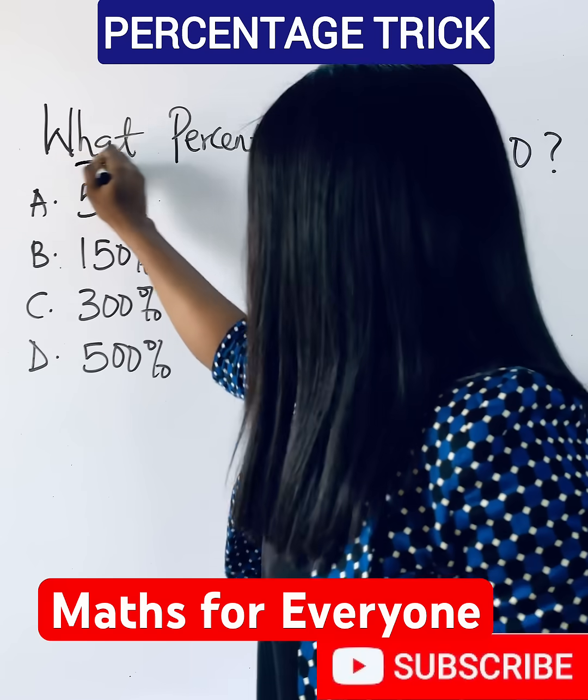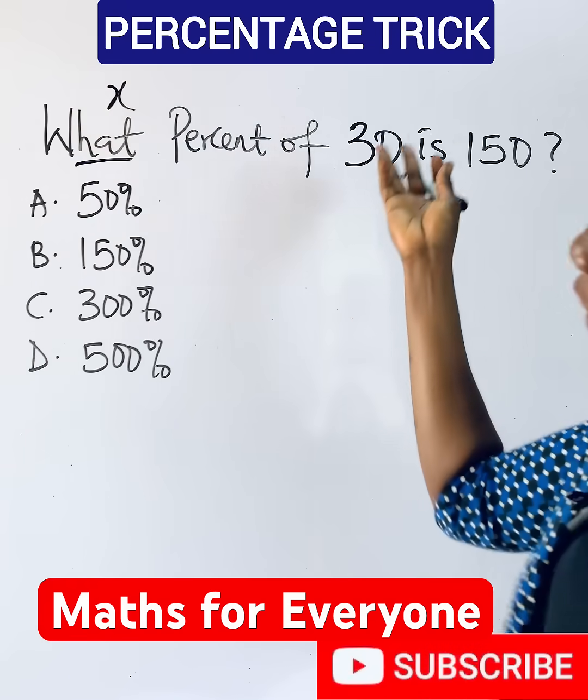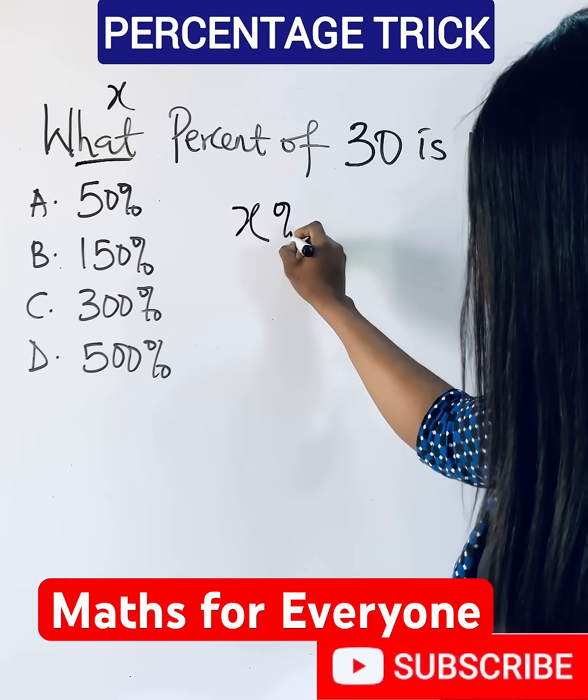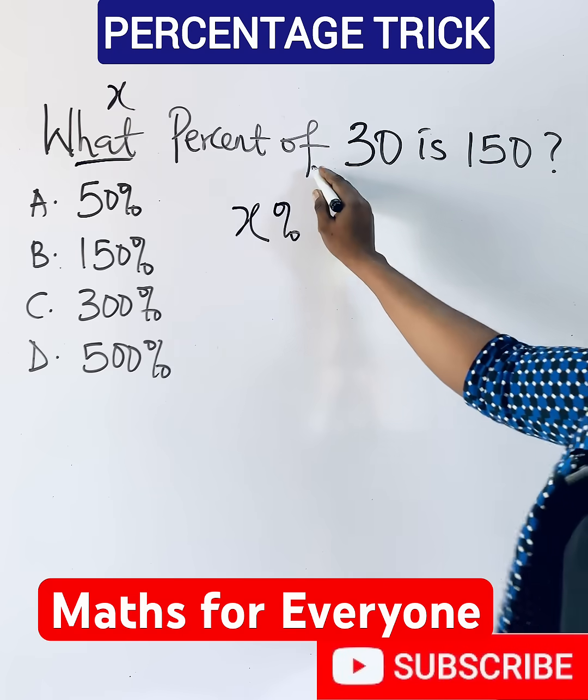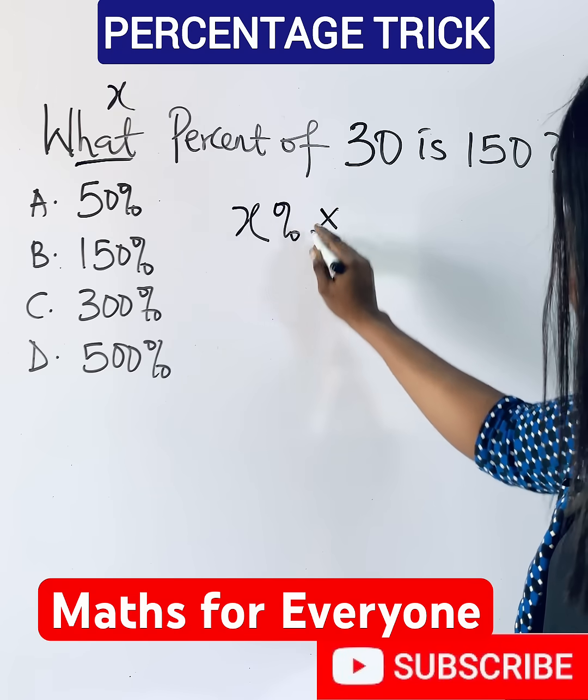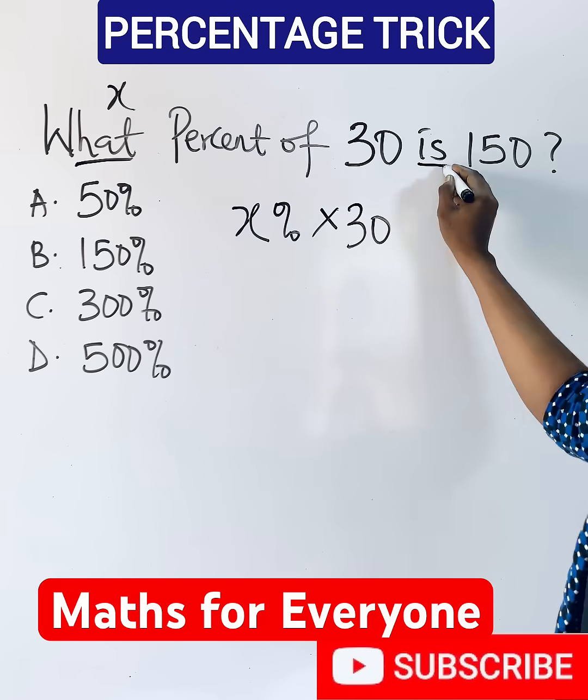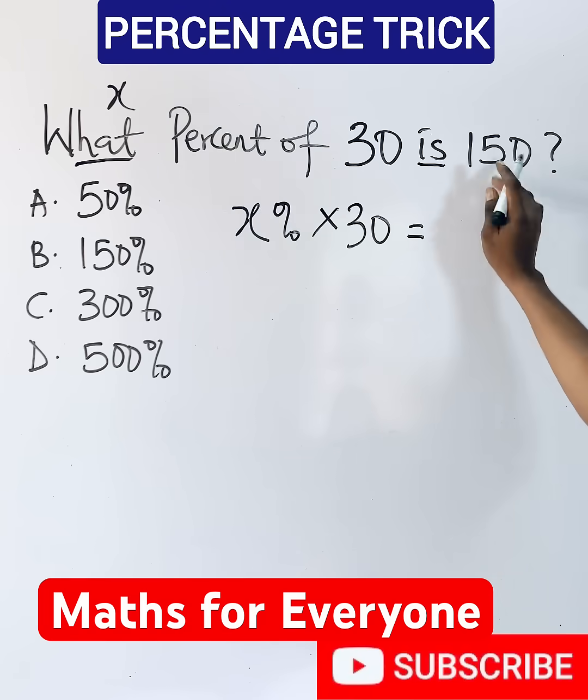You say what is x, you don't know, so you have x percent. You put your percent. Of means to multiply 30, you bring it down, is equals sign, then you return 150. You are done.